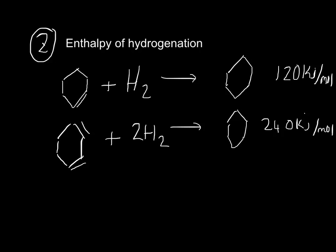You would expect benzene to have an enthalpy of 360 kJ per mole, however, it is lower than the 240 of cyclohex-1,3-diene. It is in fact 208 kJ per mole.